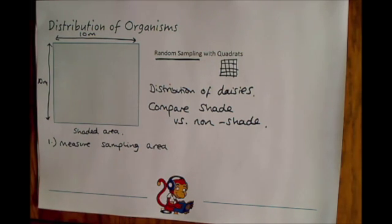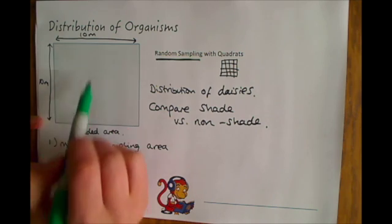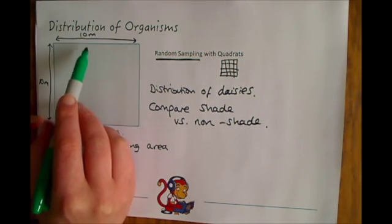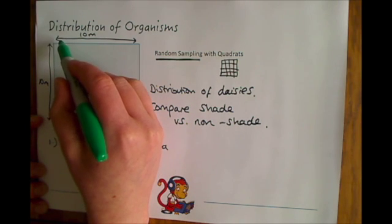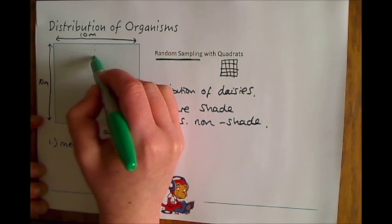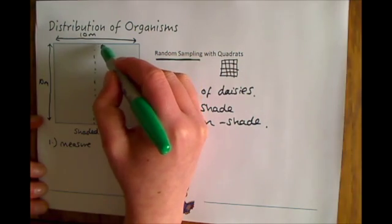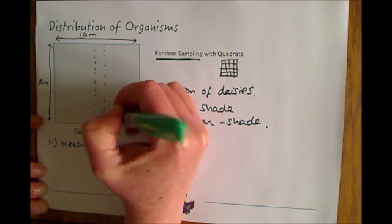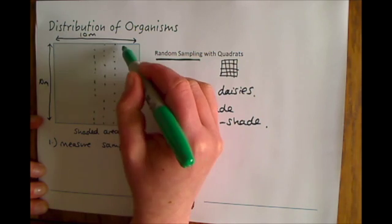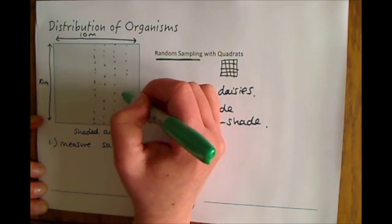Contrary to popular belief, we don't just go around throwing quadrats with our eyes closed. First of all, it's very dangerous, and it's not good practice because we might accidentally sample the same area again and again. To avoid that, the proper way to do it is to section off your sampling area into a grid.